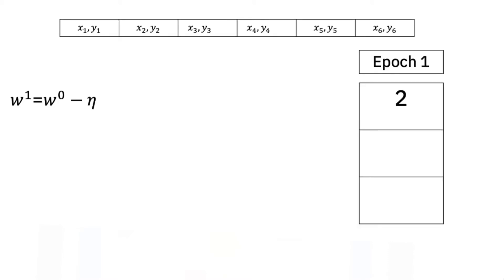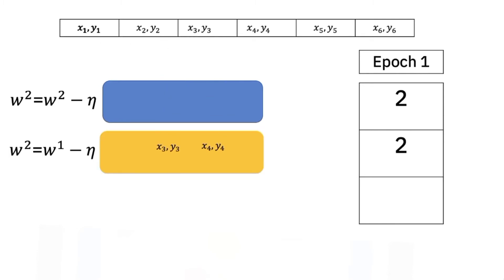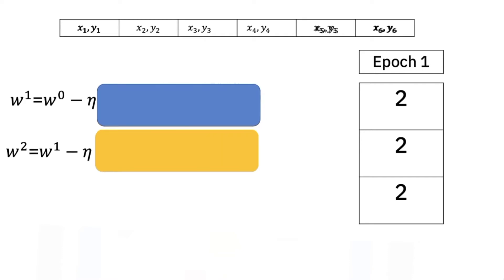Let's do the first epoch. For the first iteration we use the first two samples. For the second iteration we use the second two samples. For the third iteration we use the last two samples. Therefore with a batch size of three to complete one run or epoch through the data it took three iterations.